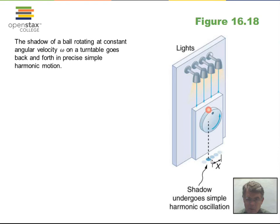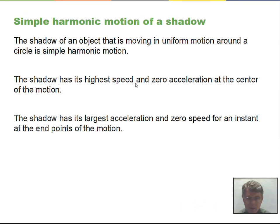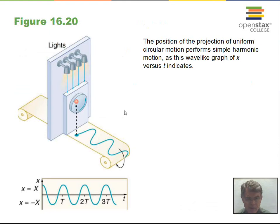To summarize: at the center of motion, speed is highest and acceleration is zero; at the endpoints, speed is zero and acceleration is largest. This is the same as for the spring and the pendulum. If you let paper move underneath this shadow while it traces ink, you would observe a wave shape — revealing the connection between waves and simple harmonic motion.